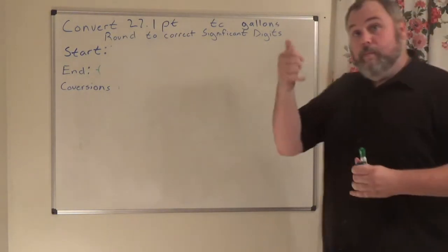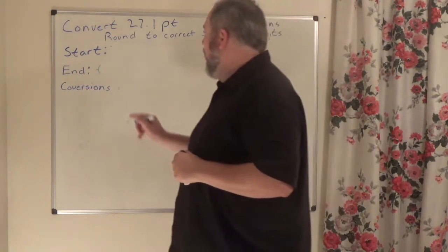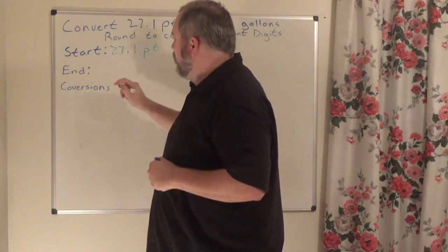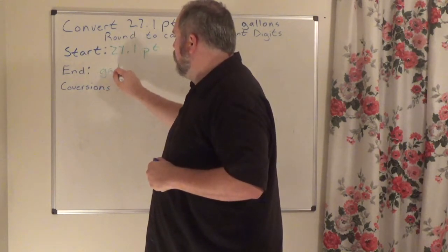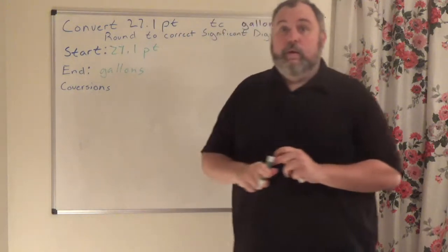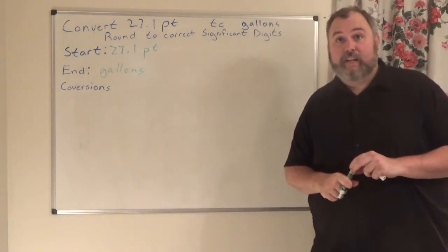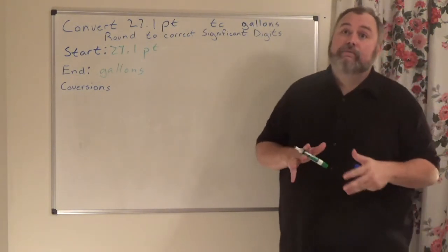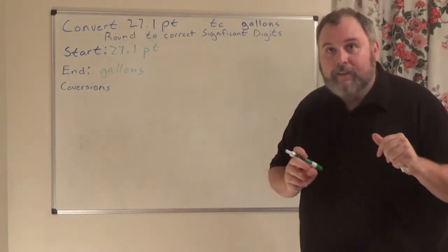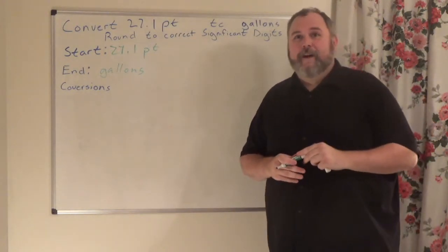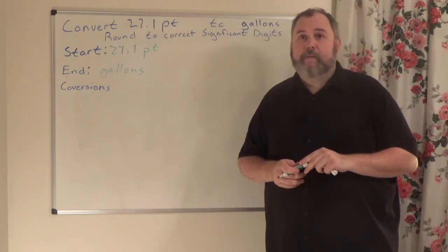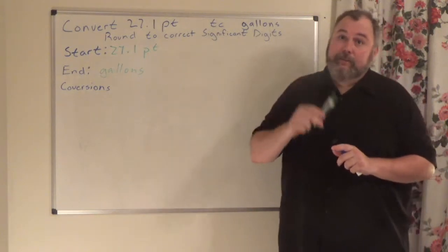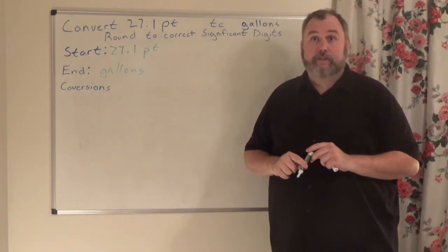Where am I starting? I'm starting at 27.1 pints. Where am I trying to get to? I am trying to get to gallons. I want you to pause the video right now and look at your formula sheet to try to find the conversion factors you need. Notice there might be a plural here — you're going to have two conversion factors.